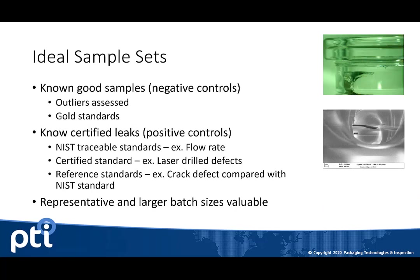So the ideal sample sets — setting up a test method means you have two known sample sets: known good samples and known defective samples. The known good samples, or negative controls, are a population we assume are good. How do we really know they are good? You can pre-qualify the samples using non-destructive methods, or you can identify outliers and remove them from your sample set. Those outliers you always want to keep — they're extremely valuable. Those outliers could be your naturally occurring defects that you're so interested in finding.